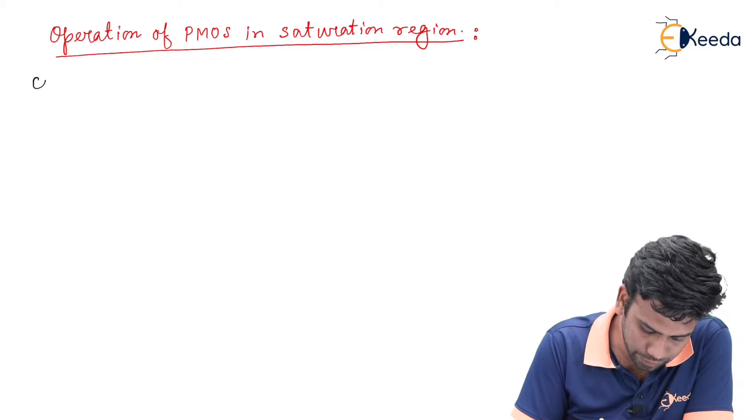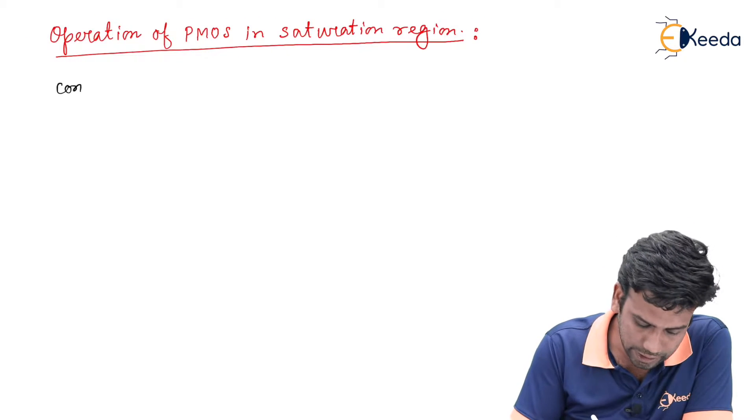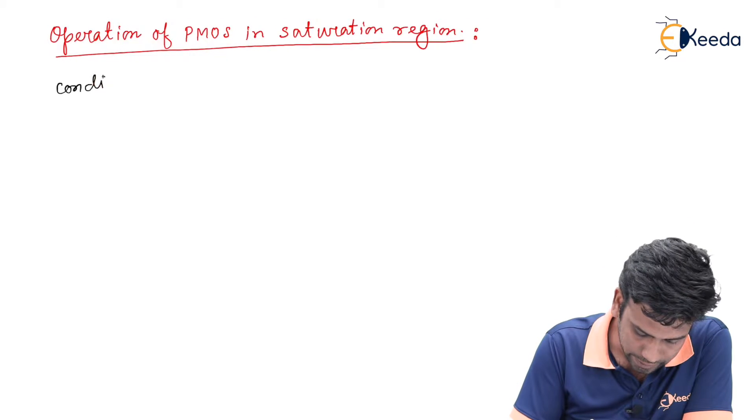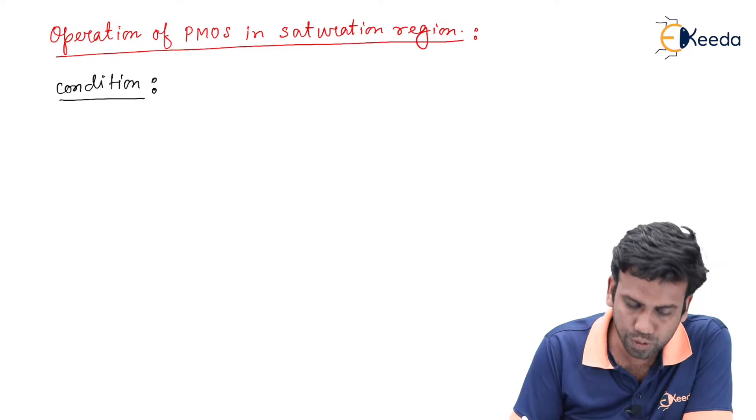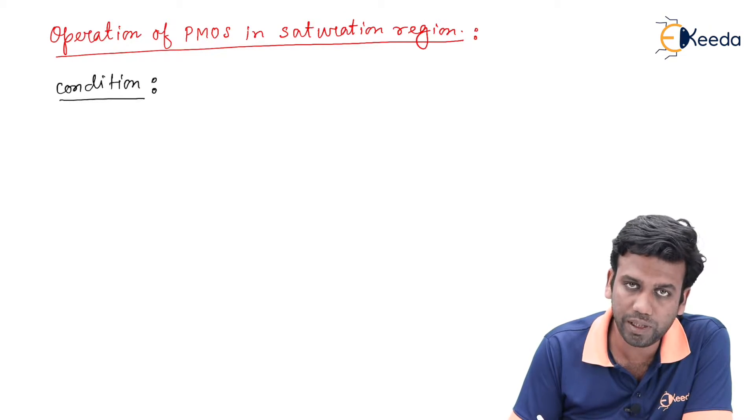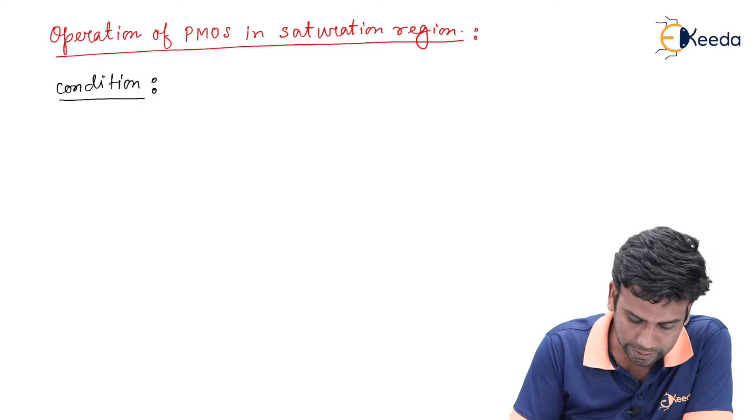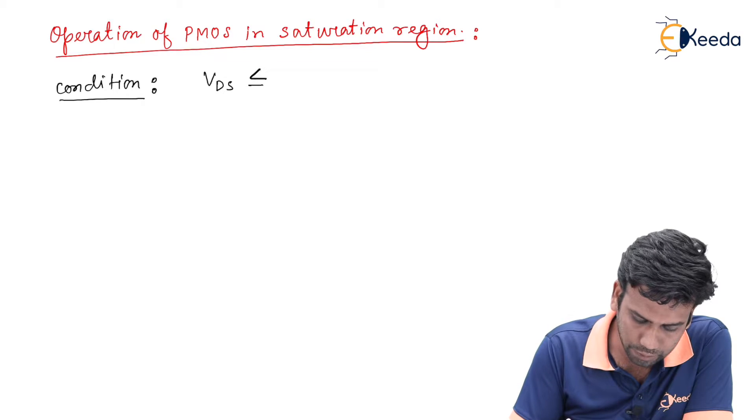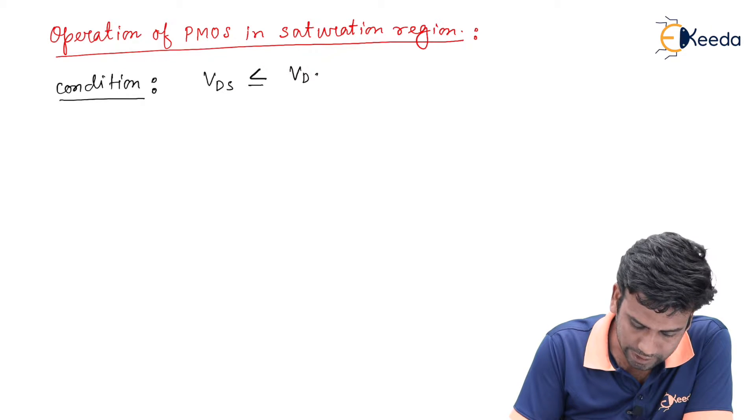The condition that should be needed to go into the saturation region for a PMOS transistor is that the VDS should be less than or equals to VDS sat. Or we can say that VDS value is less than or equals to VGS minus VT.